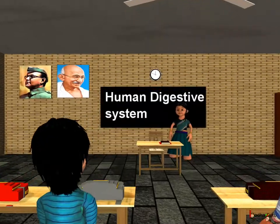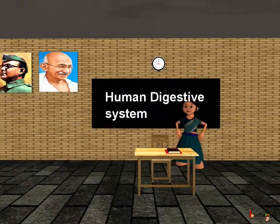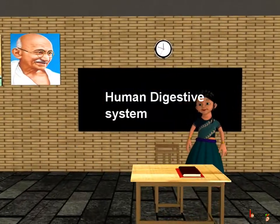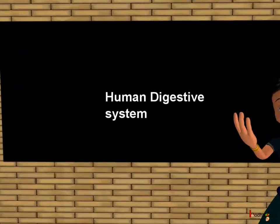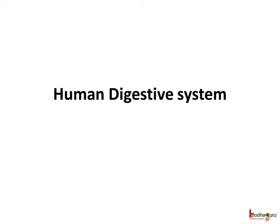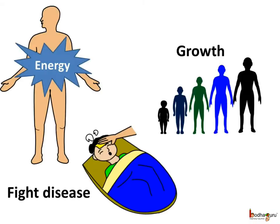Good morning children. Today we shall learn about the digestion in humans in detail. We already know the complex food that we eat gets turned into simpler substances through the process of digestion.